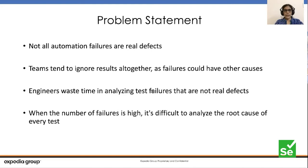With microservices architecture and CI/CD pipelines in place, it is quite difficult to analyze the failures for each and every build — mostly for every commit — and determine if they are actual bugs or not. We want to reduce the time that an engineer has to spend to determine if the automation failure is an actual bug by analyzing each and every failure.